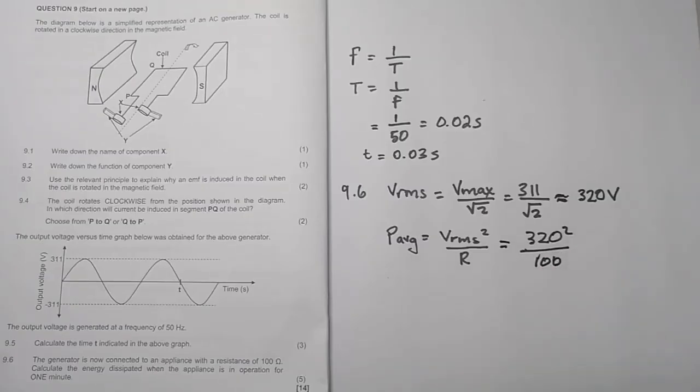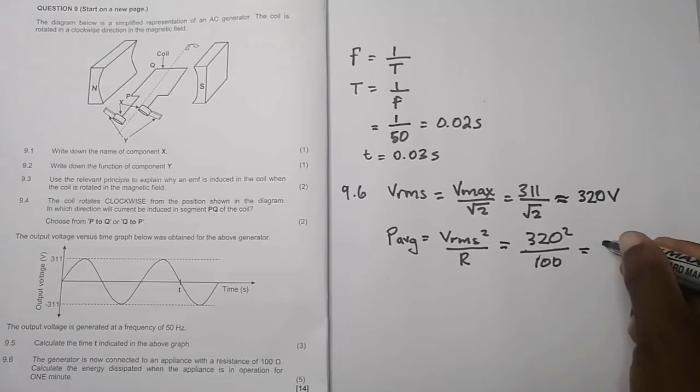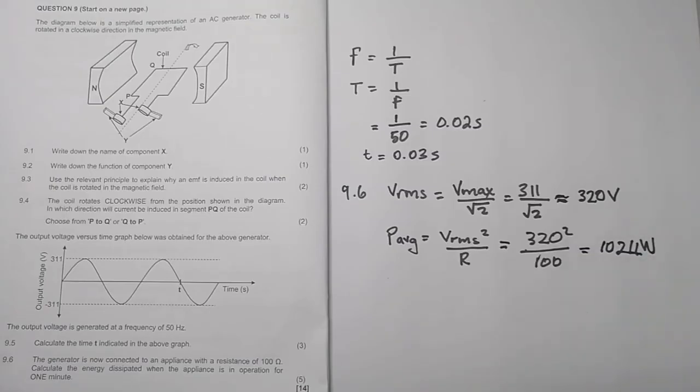So we're going to say 320 squared divided by 100 and we get a value of 1024. Now remember that is just the power. So that's 1024 watts. But remember they wanted to calculate, they wanted us to get the energy.